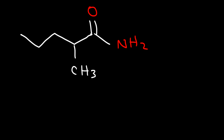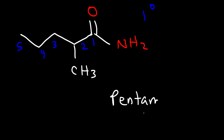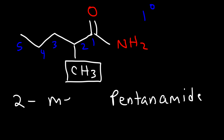How would you name that particular amide? By the way, this is a primary amide because the nitrogen atom is only attached to one carbon. We have a total of five carbons in the parent chain, so instead of saying pentane we're going to have pentanamide. We also have a methyl group on carbon two, therefore this is going to be called 2-methylpentanamide.